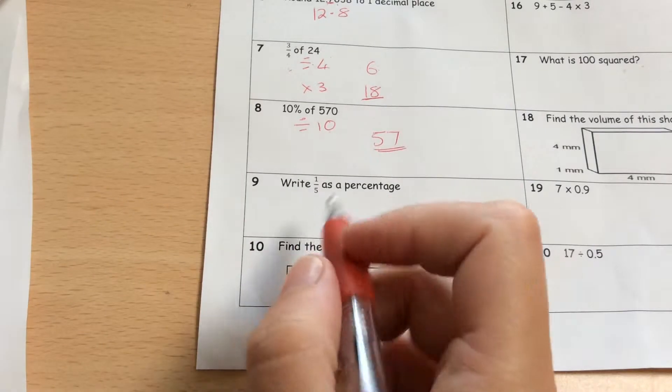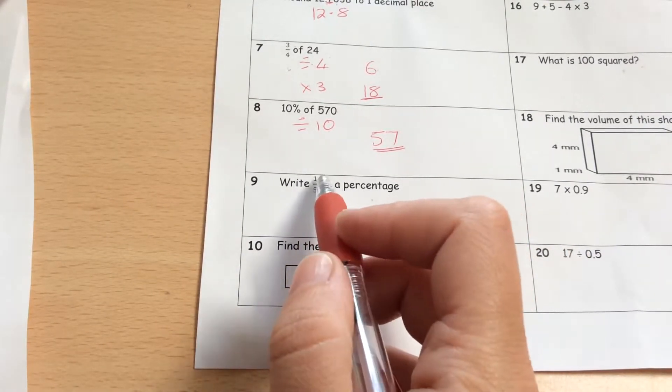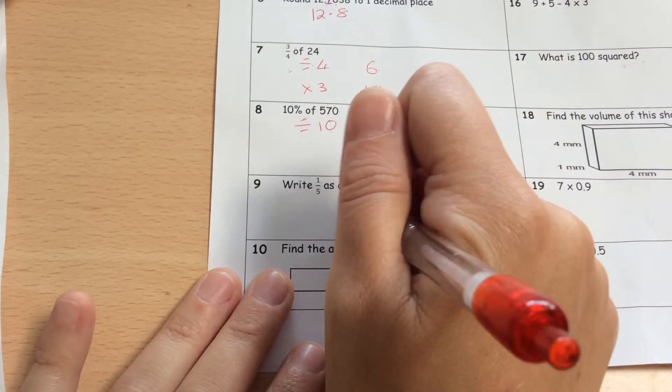In the back of your head you should always be thinking a percentage is out of 100. So if I'm trying to find a 5th, I could be finding a 5th of 100. And 1 5th of 100 is 20. So it's 20%.